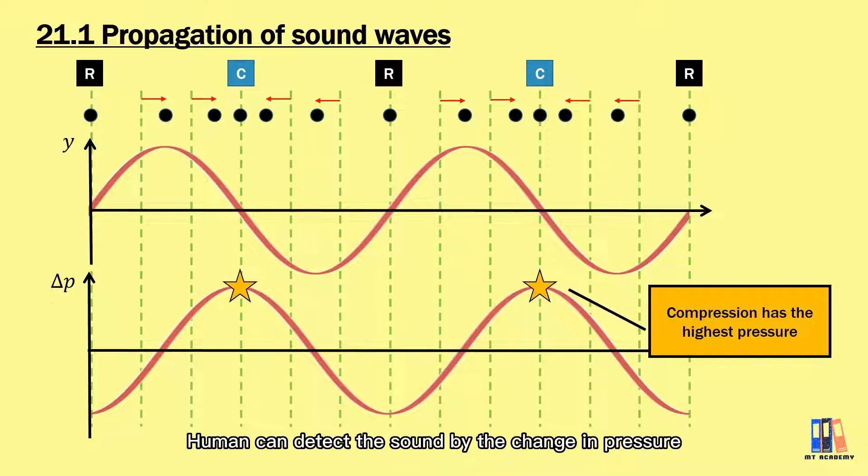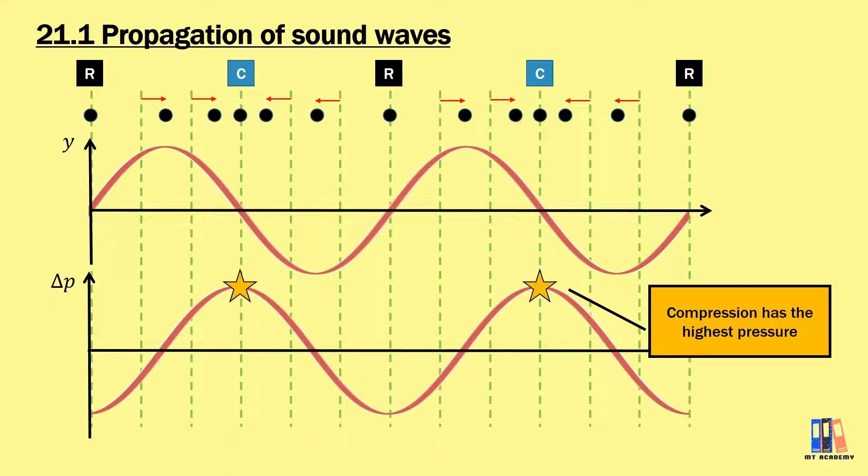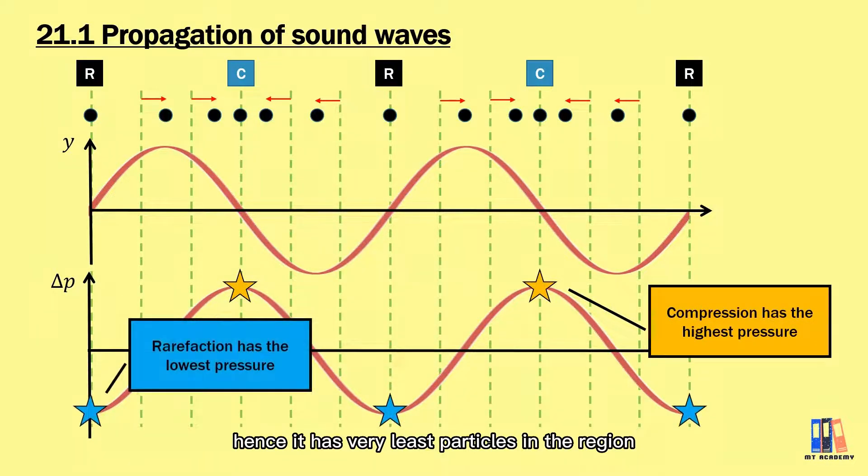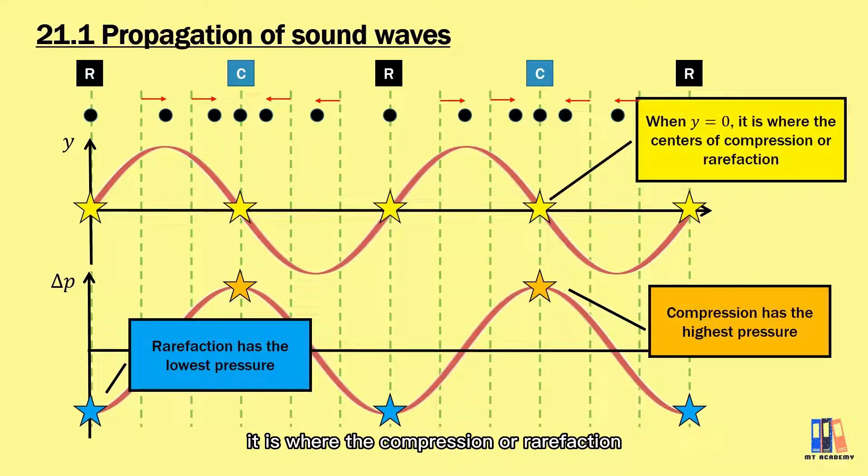Humans can detect the sound by the change in pressure. So we would usually observe the pressure variation instead of the absolute pressure. In short, pressure at compression is higher than at rarefaction. For rarefaction, particle on the left side has negative displacement while the particle on the right has positive displacement. Hence, it has very least particles in the region and it has the lowest pressure. One more thing to take note, when we have zero displacement that y equals zero, it is where the compression or rarefaction, which has either maximum or minimum pressure variation.